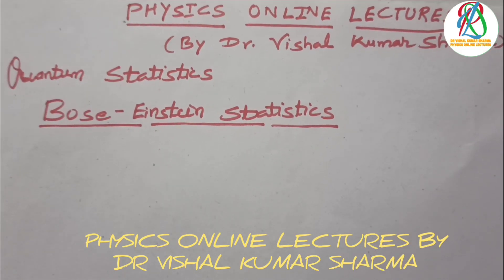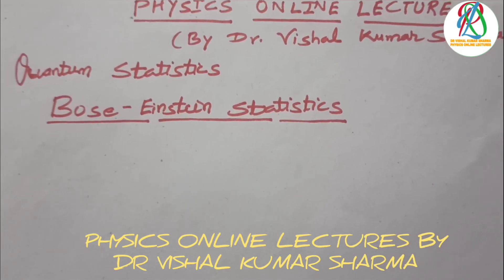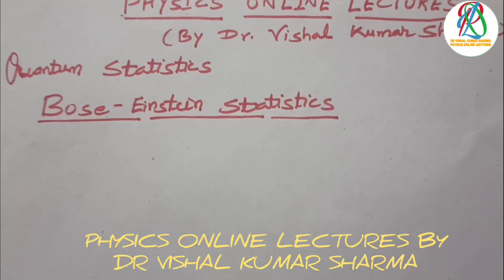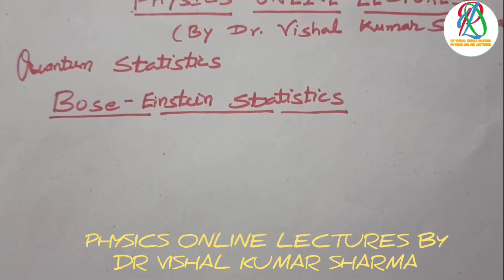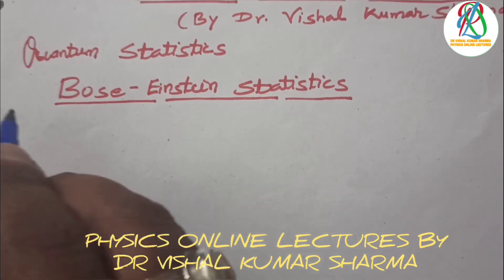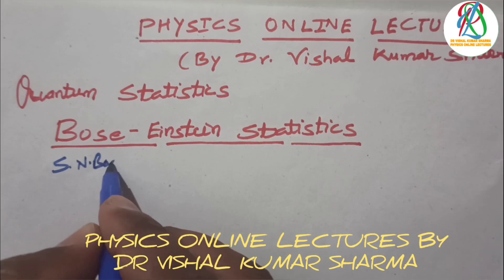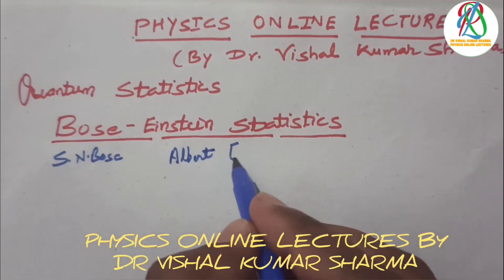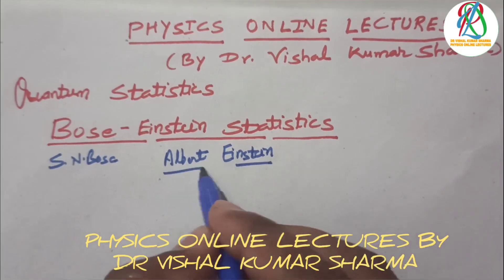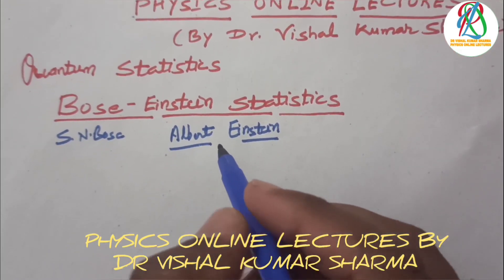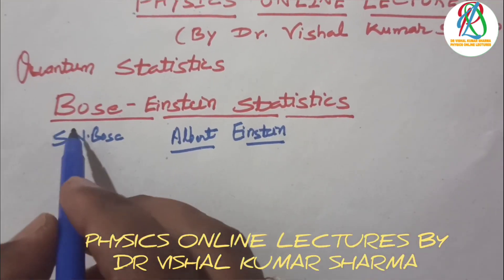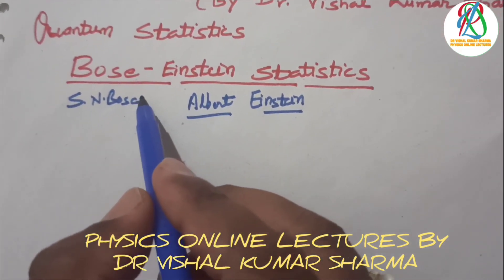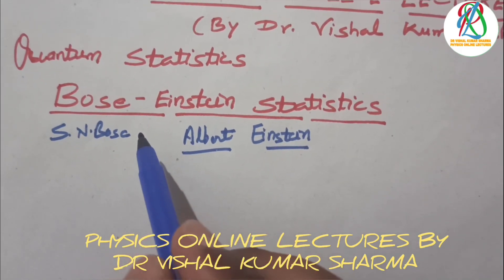In this lecture I am starting a new series on quantum statistics — the Bose-Einstein statistics. It is called Bose-Einstein statistics because S.N. Bose was an Indian scientist, and Albert Einstein is the well-known physicist who gave the special theory of relativity. Combined on both of these scientists' names, this is called Bose-Einstein statistics.